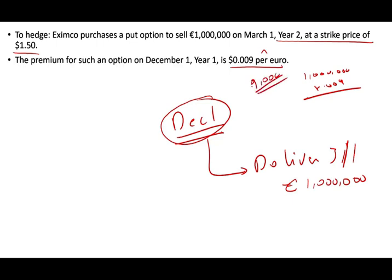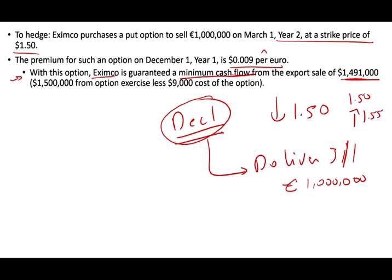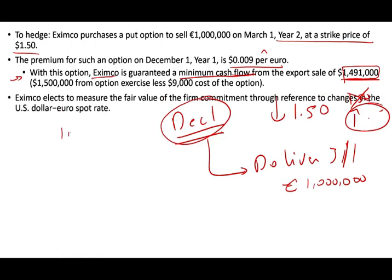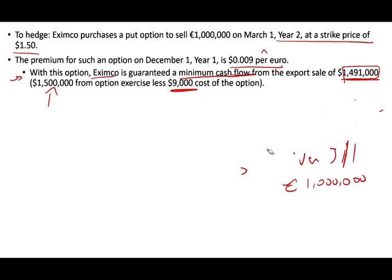With this option, the company is guaranteed a minimum cash flow of $1,491,000. Why? Because if the price of the euro drops below $1.50, they can sell the euros at $1.50. If the price of the euro is $1.55, they let the option expire and sell the euros at $1.55. The minimum is $1,491,000 because: if they sell the euros at $1.50, they receive $1,500,000, minus the $9,000 premium, equals $1,491,000.